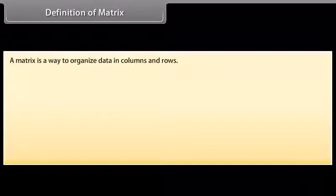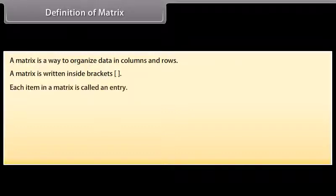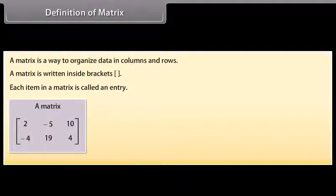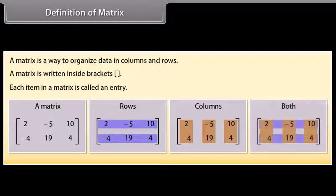A matrix is a way to organize data in columns and rows. A matrix is written inside brackets. Each item in a matrix is called an entry. Look at this matrix — it has two rows and three columns. The entries of the matrix are 2, -5, 10, -4, 19, 4.